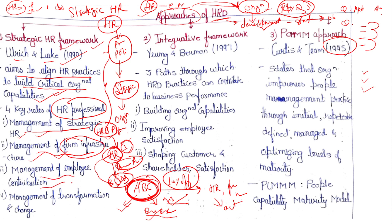Third is management of employee contribution. Your employees will be your business partner, and your practices and functions will align organizational goals only when you align individual goals to organizational goals — this is very, very important. When individual goals are aligned to organizational goals, automatically there is alignment. Management of employee contribution in the form of workers' participation in management and suggestions is important. Fourth is management of transformation and change. HR is considered a change agent — they prepare employees to be ready for coming changes, accept changes, and be ready for uncertain situations. It is the responsibility of HR to act as a transformation or change agent.